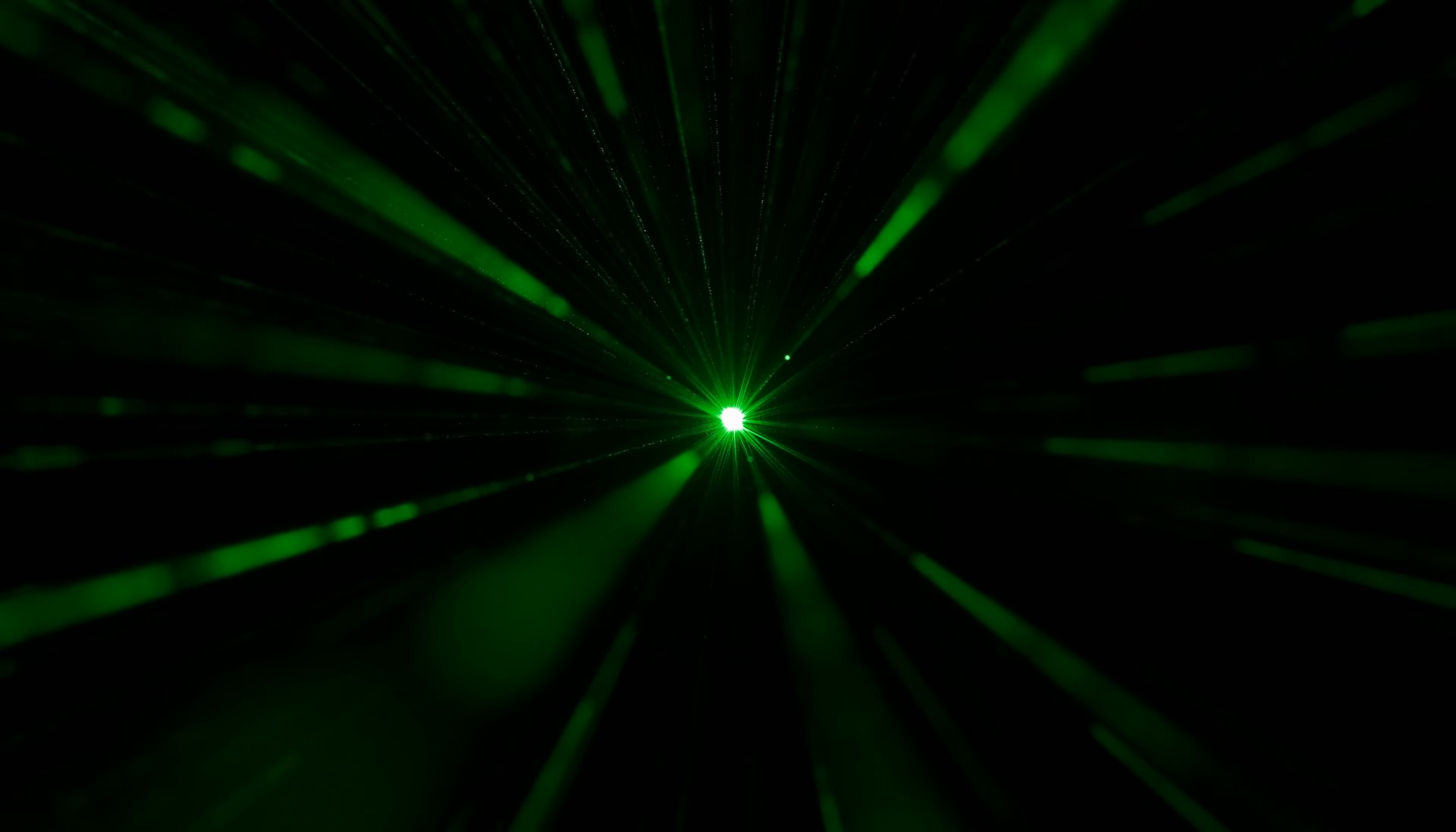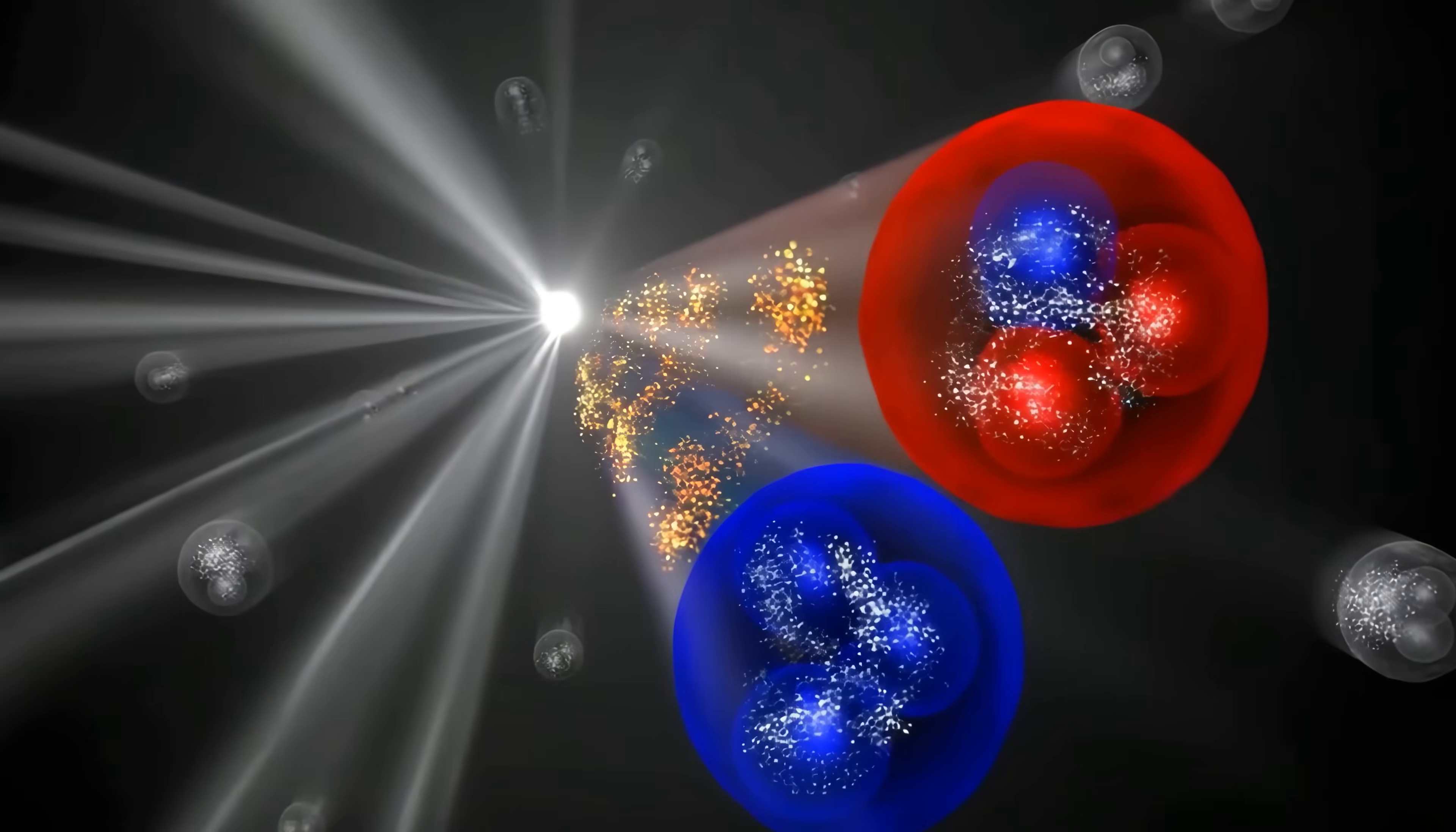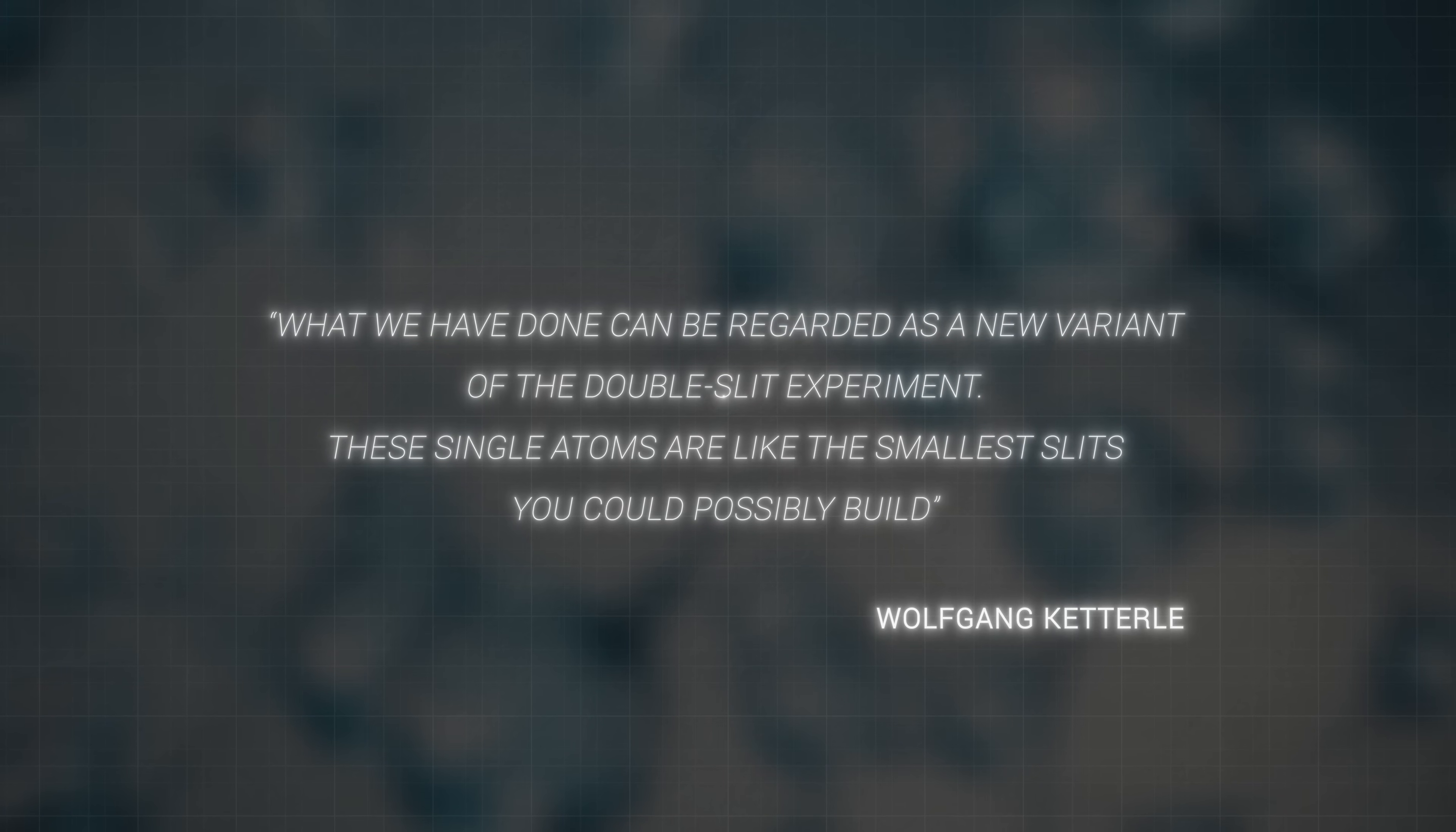Everything was now ready for the photon's journey. The researchers directed an extremely weak laser beam tuned so that on average only one photon at a time would scatter from the atoms. Each photon's task was similar to Young's original setup. It interacted with two neighboring atoms in the lattice, just as it interacted with two slits in the classical experiment. As Ketterle explained, what we have done can be regarded as a new variant of the double-slit experiment. These single atoms are like the smallest slits you could possibly build.